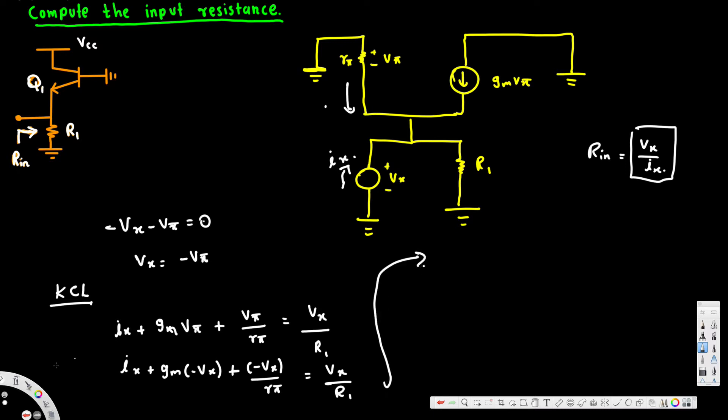Now let's continue. If I keep i_x on this side and move the other things to the other side, it's going to be i_x = v_x/r1 + v_x*gm + v_x/r_phi. If I take v_x common, this is going to be v_x*(1/r1 + gm + 1/r_phi).